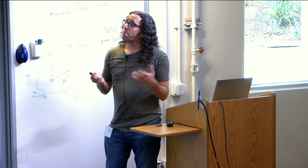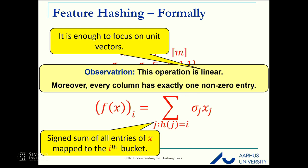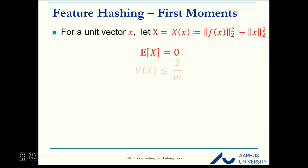This operation is, of course, linear and moreover, it is as sparse as possible. Every entry of x is only considered once. But previously we said this cannot guarantee what we want for all vectors. So why does it work in practice?